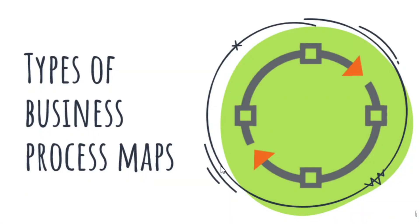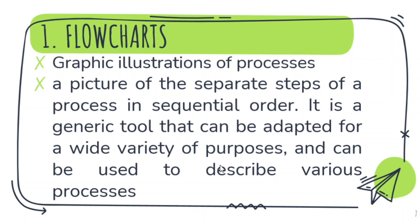Let's proceed to the types of business process maps. The first one is the flowchart — this is something we're all probably familiar with. Flowcharts are graphic illustrations of processes. It is a picture of the separate steps of a process in sequential order. It is a generic tool that can be adapted for a wide variety of purposes and can be used to describe various processes such as manufacturing, administrative, service processes, or a project plan.